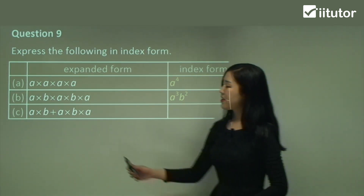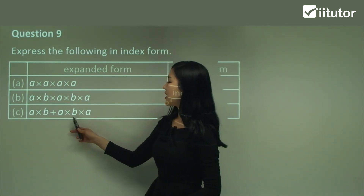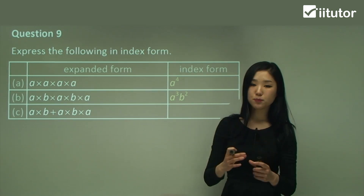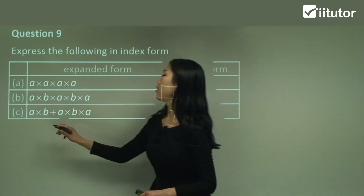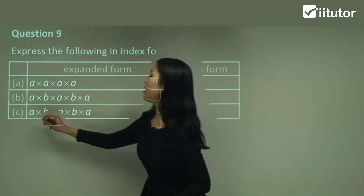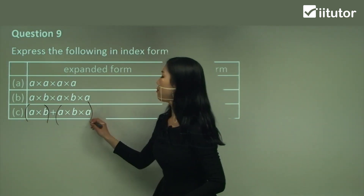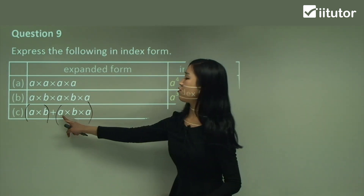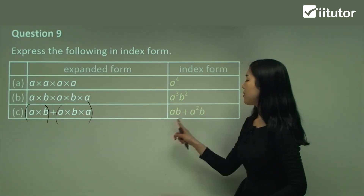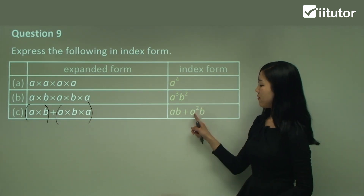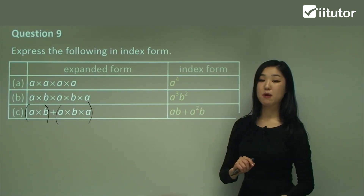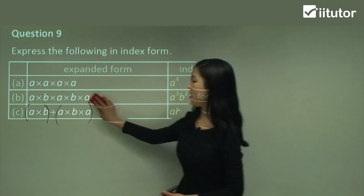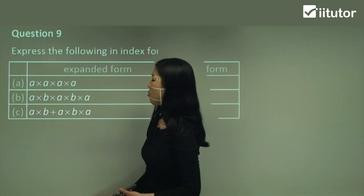See how we're doing a times b plus a times b times a. If we have plus or minus in between, you only look at where it multiplies — don't do anything with the addition. I'm using brackets just to divide the groups so you don't get confused. So a times b is just ab. And here there are 2 lots of a's and 1 b, so it's going to be a²b. We simply add them up, but we can't because they're not like terms, so we leave it as ab + a²b.